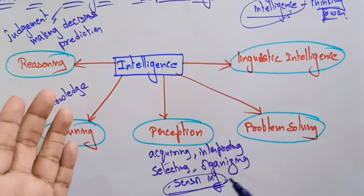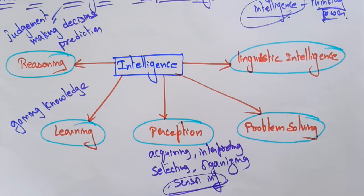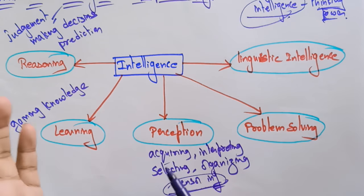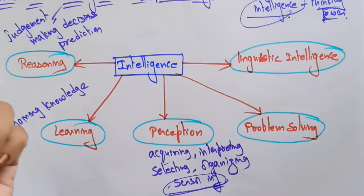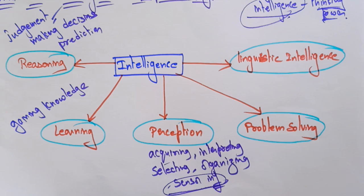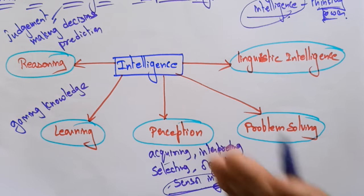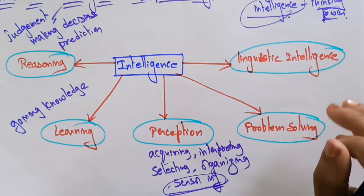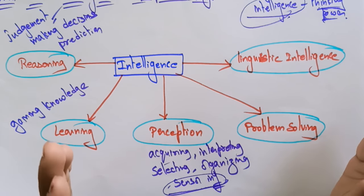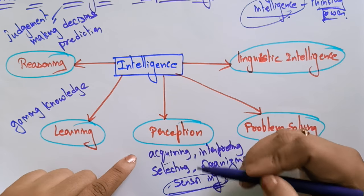In human beings, perception is aided by sensory organs — touch, hearing, seeing — eyes, ears, nose. These are all the sense organs, and because of them we are able to perceive. So perception in humans is aided by these sense organs.